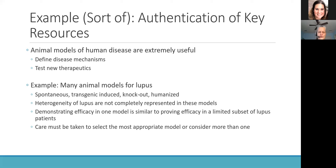Animal models are kind of somewhere between a biologic variable and a key resource, but we can use them as an example. Animal models of human disease are very useful and can be used to define disease mechanisms and test new therapeutics. In the area of lupus and scleroderma research, there are lots of animal models for lupus — spontaneous models, transgenic induced models, knockout models, and humanized models. In humans, the disease itself is heterogeneous, so any one of these models does not completely represent the heterogeneity of lupus as a human disease, which means that if you demonstrate efficacy in one animal model...